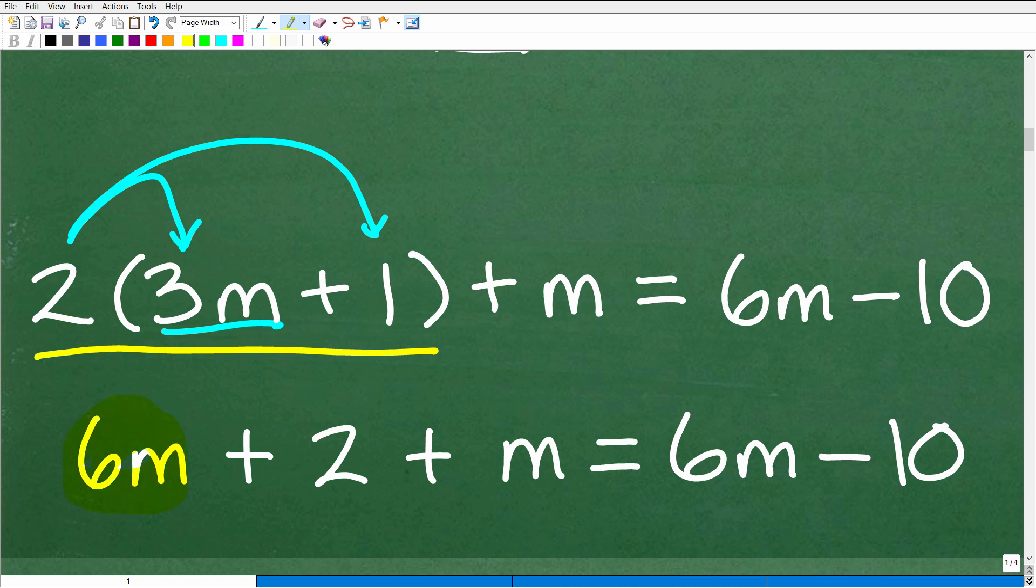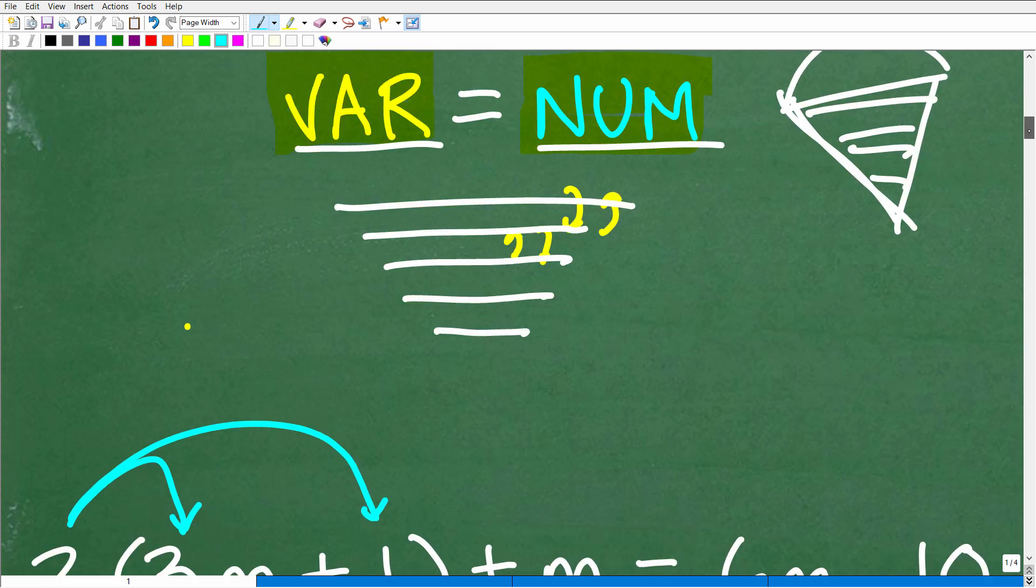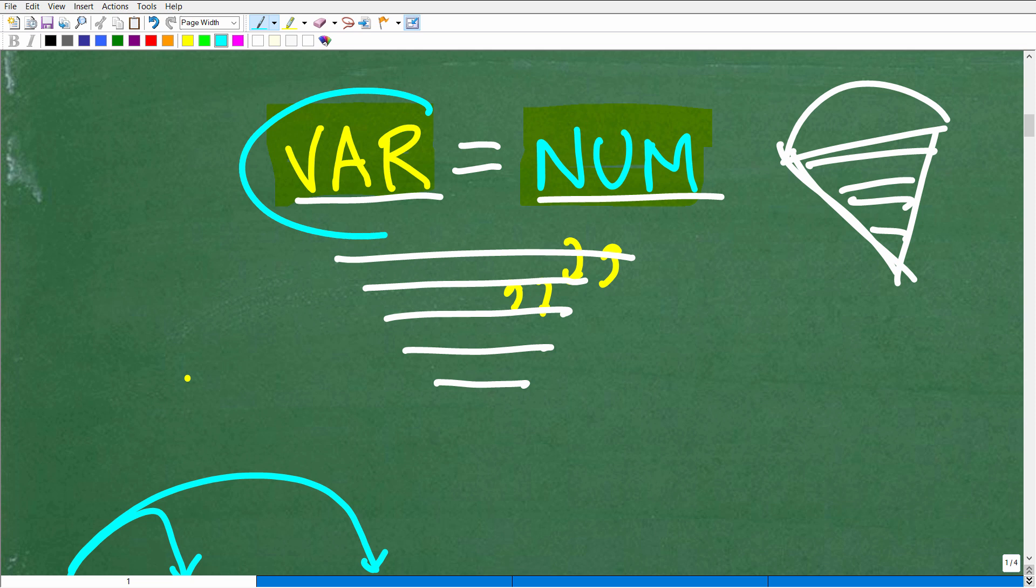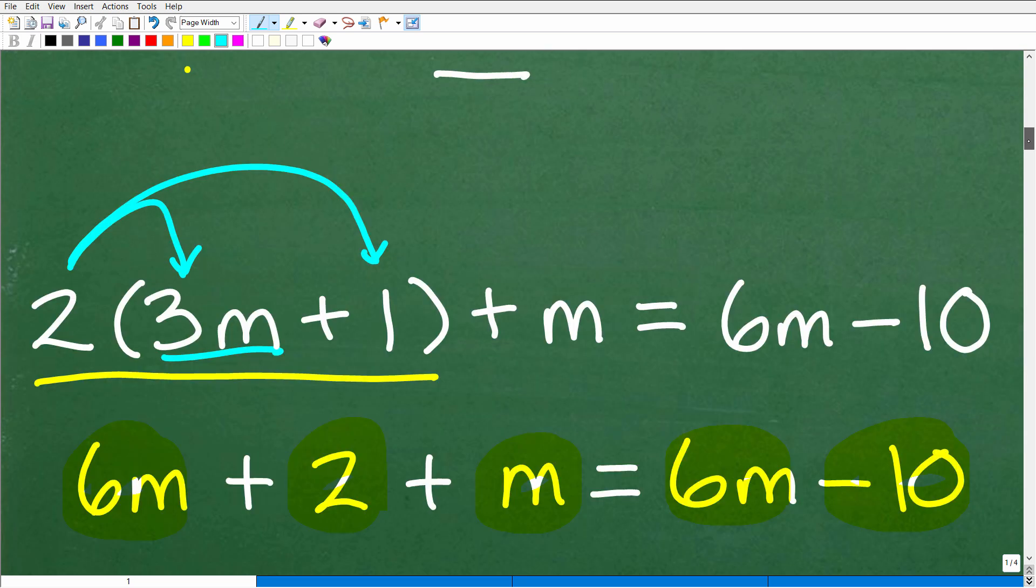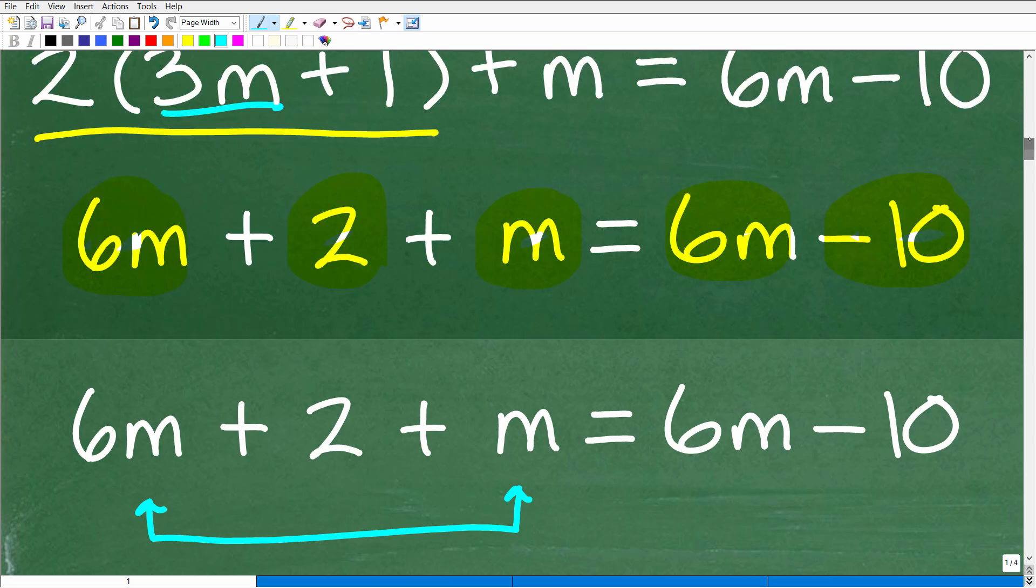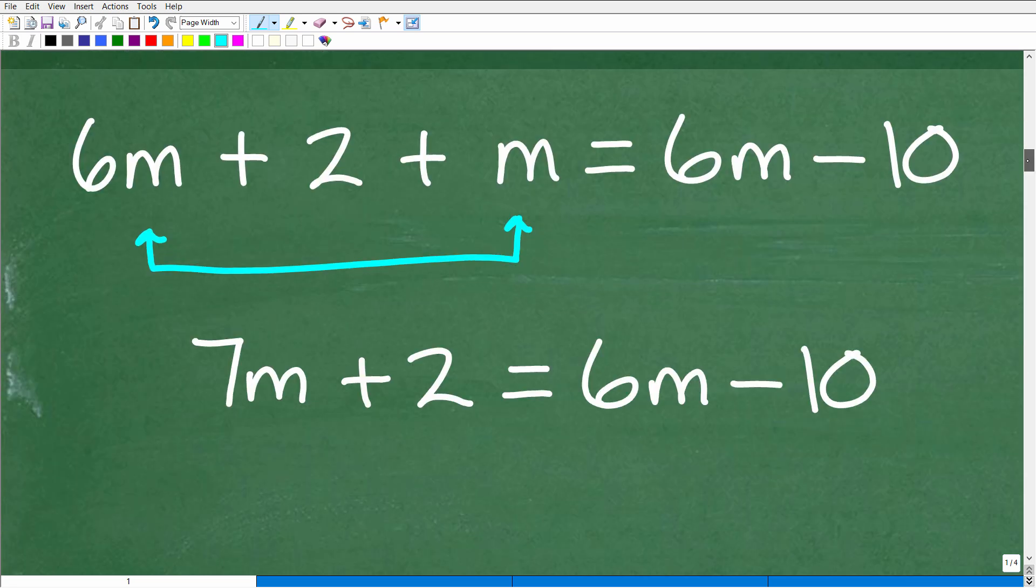Okay, so we have a 6m here. That's a variable term. We have an m or a 1m right there. That's another variable term. We have a 6m over here. We have a 2. Of course, that's a number. And we have a negative 10 on this side. So, again, the objective here is to get all of our variable terms to the left-hand side and all of our numbers to the right-hand side. So that's what we need to work on. And we're going to do this step by step. So let's go ahead and take a look at the next thing we need to do.